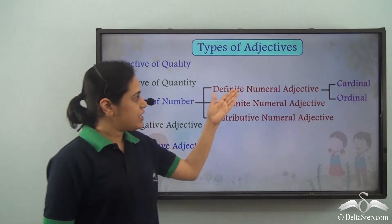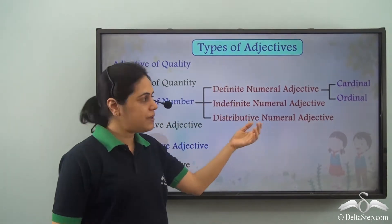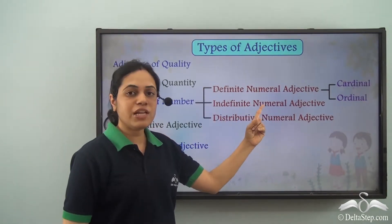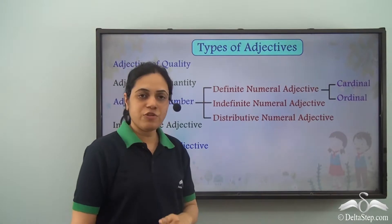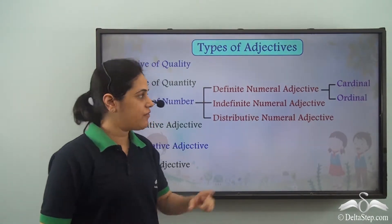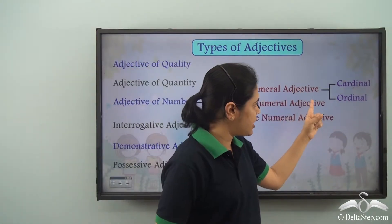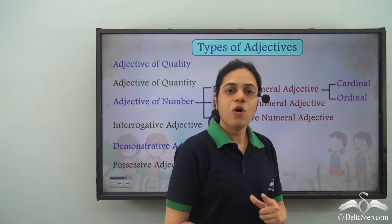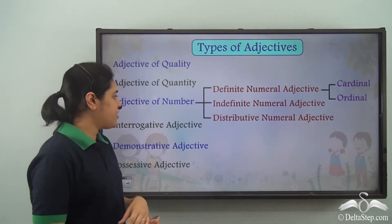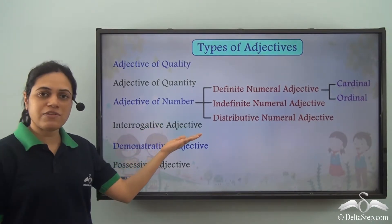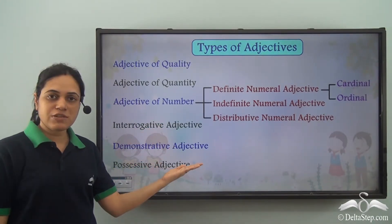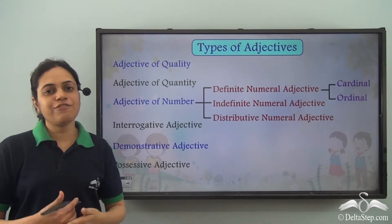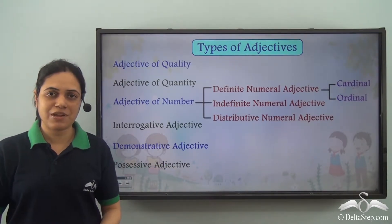Adjective of number is further divided into three types: definite numeral adjective, indefinite numeral adjective, and distributive numeral adjective. Definite numeral adjective can be of two types — cardinal or ordinal. We have also learned interrogative adjective, demonstrative adjective, and possessive adjective. So these are the different types of adjectives that we have learnt.